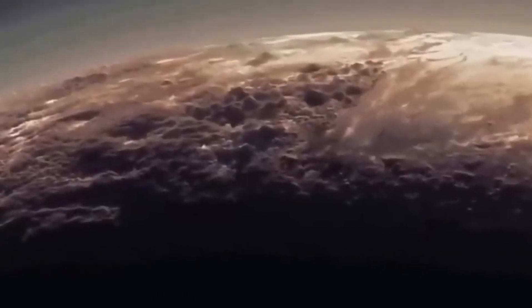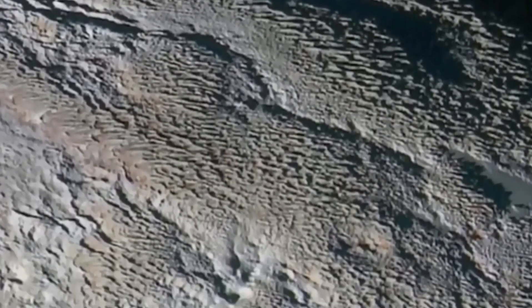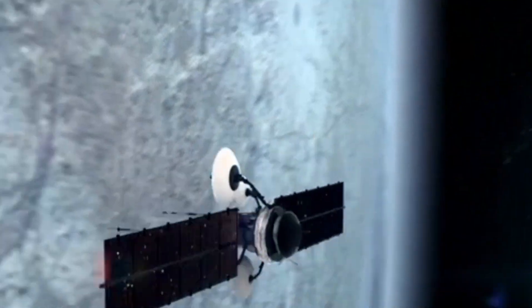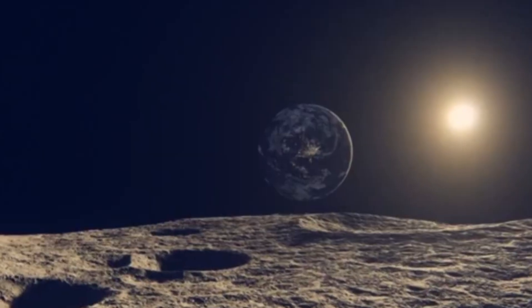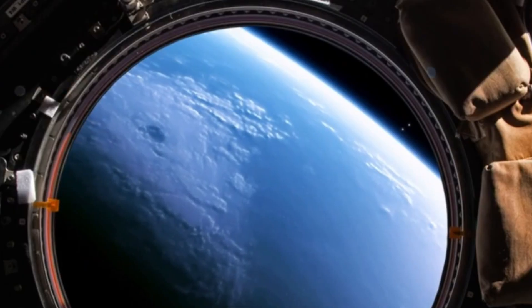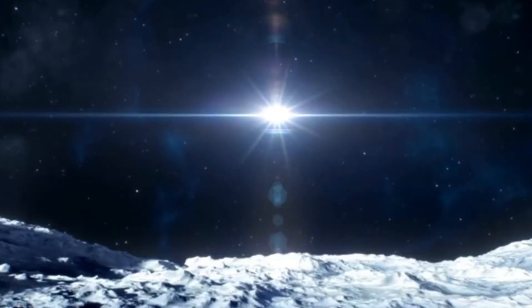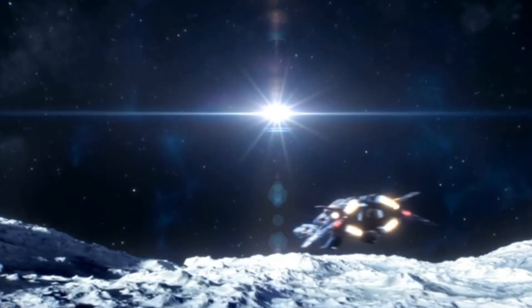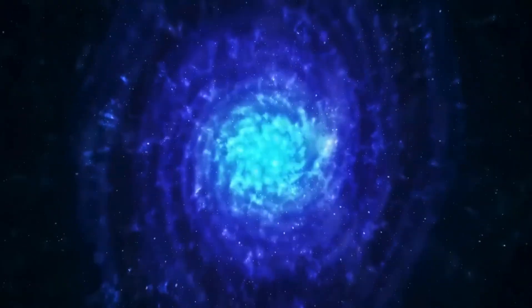Understanding Pluto's orbit is important, especially when we think about whether it might crash into Neptune in the future. This knowledge helps us understand better how our solar system works. Pluto's orbit shows us how orbits that seem wobbly can balance out because of gravity and how things move in space. It's important to keep watching and studying these things so we can understand where we fit in the universe. When we explore space, we find out that things can be unpredictable, and Pluto's orbit is a great example of that unpredictability.